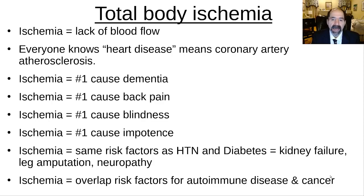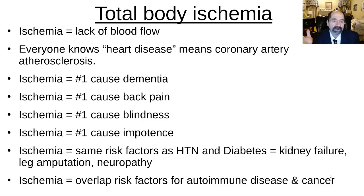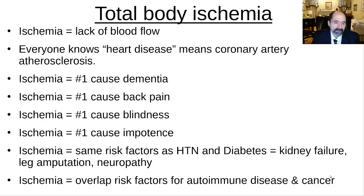What's the point of this knowledge being useful? When you fix one problem, you fix all of them. If you minimize your atherosclerosis and optimize blood flow, you help prevent dementia, back pain, heart disease, and blindness. Everything in your body works better with good blood flow. The same risk factors for atherosclerosis and ischemia are almost entirely the same for hypertension and diabetes — and those diseases cause kidney failure, leg amputations, and neuropathy. Healthy aging means good blood flow, good arteries.